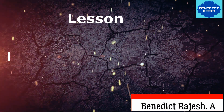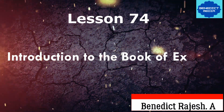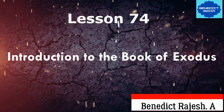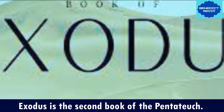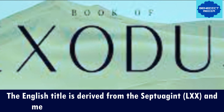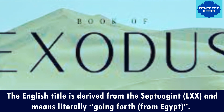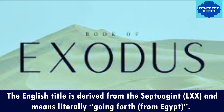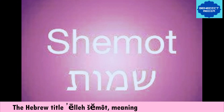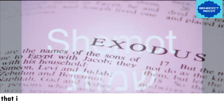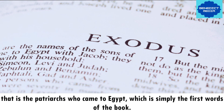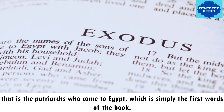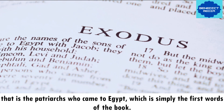Bible Shorts lesson 74: introduction to the book of Exodus. Exodus is the second book of the Pentateuch. The English title is derived from the Septuagint and means literally 'going forth from Egypt.' The Hebrew title, 'La Semoth,' meaning 'these are the names' — that is, the names of the patriarchs who came to Egypt — is simply the first words of the book.